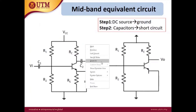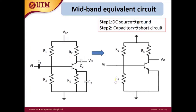Step 1: we have a DC source here, so it is replaced with ground. Then we have capacitors — C1 and C2 are coupling capacitors, which make the connection between the input to the amplifier or between the amplifier to the load, so both become short circuits. C3 is in parallel with the emitter resistor, so C3 is called a bypass capacitor.